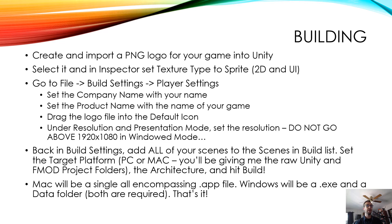Then go to File, Build Settings, Player Settings. For Company Name, use your name. Product Name is the name of your game. Then drag that logo file from the assets in Unity into the default icon. Under Resolution and Presentation Mode, set the resolution — but really, you don't want to go above 1920x1080 in windowed mode. Be aware that that is HD and most people do not have the ability to go beyond that, so don't.